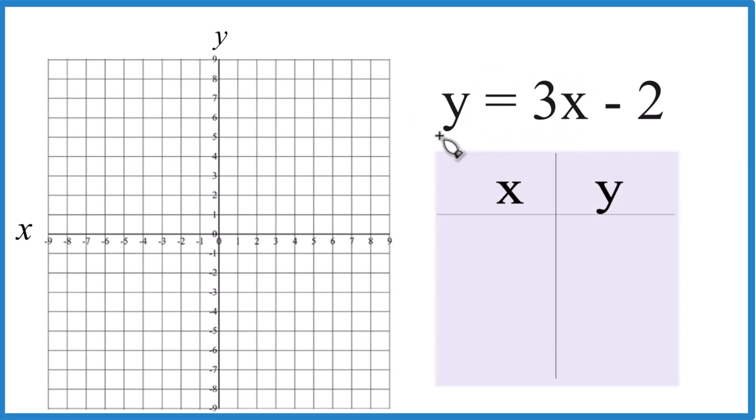In this video we're going to graph this equation y equals 3x minus 2. We're going to use a table of values. So what we're going to do is put a value in for x, do all the math here, get y, and then we'll take that point and put it on our graph and we'll end up with a line for y equals 3x minus 2.